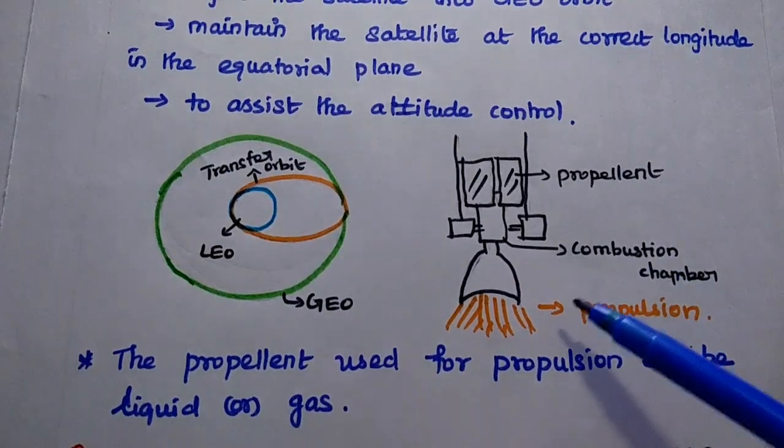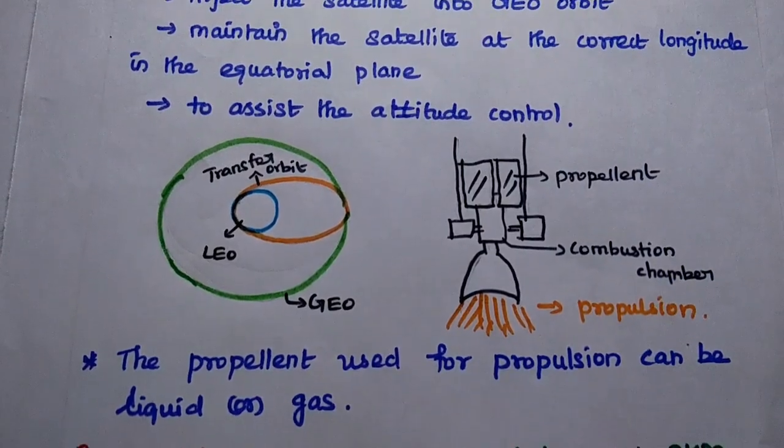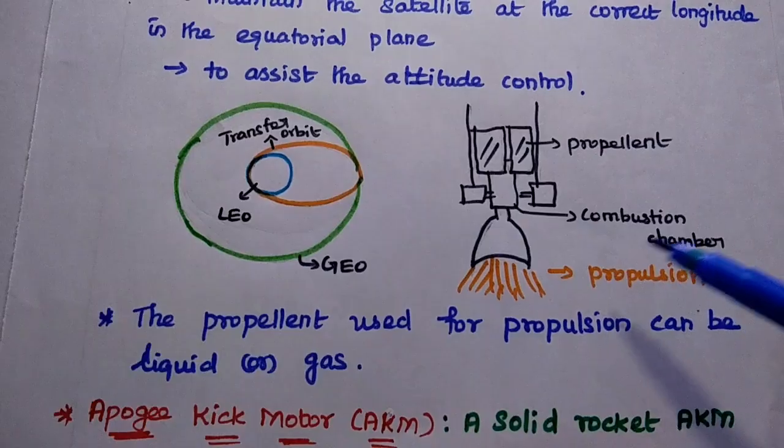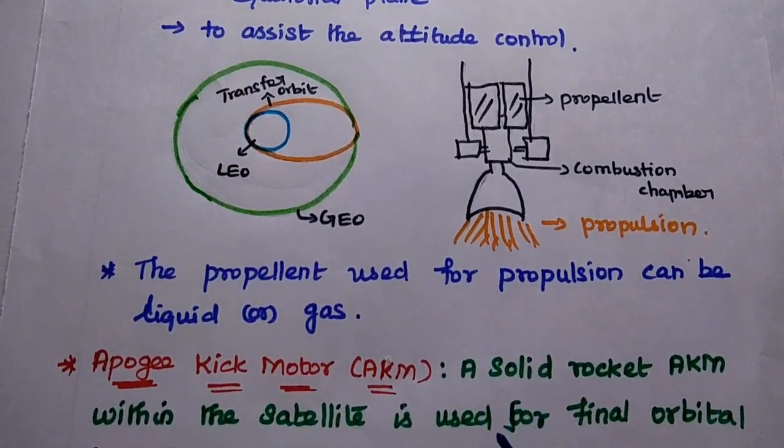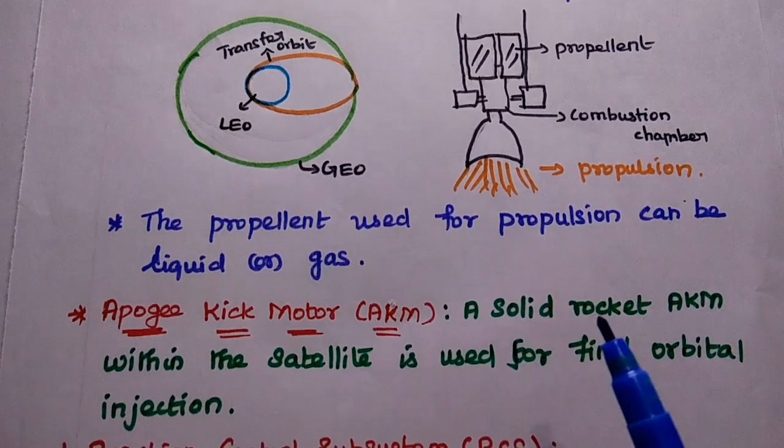It has a propellant tank, combustion chamber, and nozzle for chemical propulsion. There are different types of propulsion available: chemical propulsion, electric propulsion, and thermal propulsion.